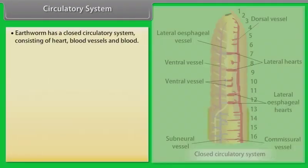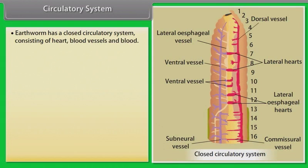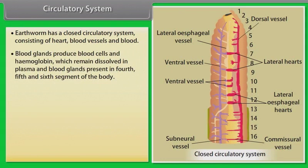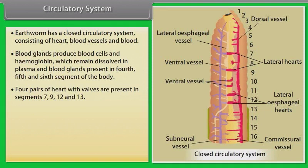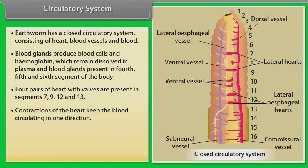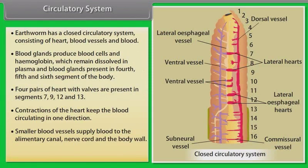Earthworm has a closed circulatory system consisting of heart, blood vessels, and blood. Blood glands produce blood cells and hemoglobin, which remain dissolved in plasma. Blood glands are present in the fourth, fifth, and sixth segments. Four pairs of hearts with valves are present in segments seven, nine, twelve, and thirteen. Contractions of the heart keep blood circulating in one direction. Blood cells are phagocytic in nature.